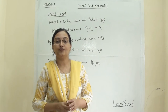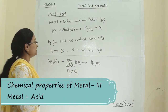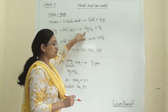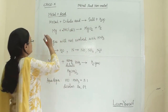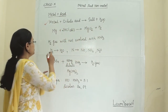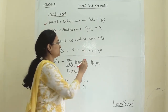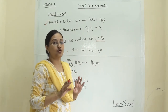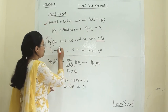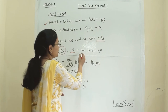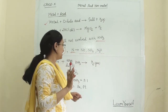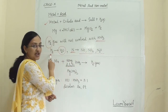Now we will see the reaction of metals with acid. Taking dilute hydrochloric acid — when magnesium reacts with it, it gives magnesium chloride, which is a salt, and hydrogen gas. The generalized equation is: metal + dilute acid → salt + hydrogen gas. However, hydrogen gas does not evolve when metal reacts with nitric acid because nitric acid is a very strong oxidizing agent — it further oxidizes the hydrogen gas into water.